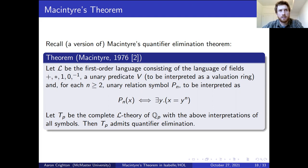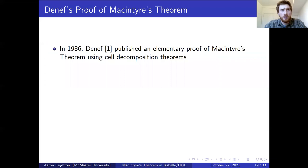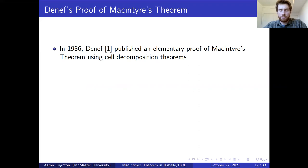McIntyre's original proof is fairly model-theoretic, involving the compactness theorem and saturated models — that may not be suitable for formalization in Isabelle because of the logical overhead required. Instead, I used as a scaffold a proof of McIntyre's theorem due to Denef. In 1986, Denef published an entirely algebraic proof that doesn't use any concepts from logic at all, so less conceptual overhead probably means it would be an easier way to get this result in Isabelle.